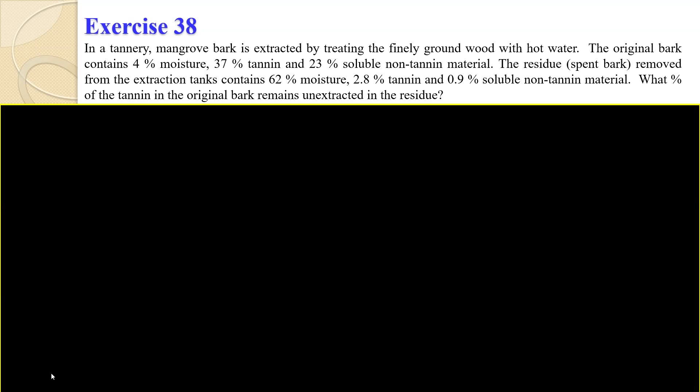Let's write the given first. We have an extraction or extractor. Then you have the feed, the solvent, the extract, and the raffinate. So let's write the given: 4% H2O, 37% tannin, and then 23% soluble but non-tannin. Let's just call it non-tannin.